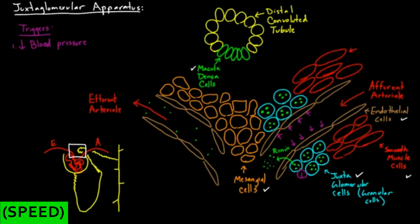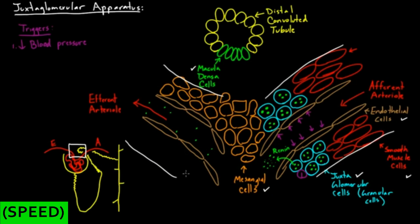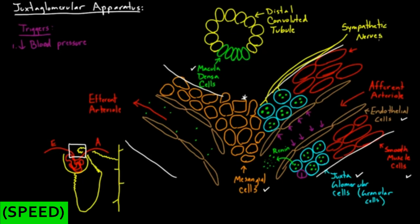The second trigger is a nerve cell trigger. Remember that this is a blood vessel with our two layers: our endothelial layer and our tunica media layer. There's also an external layer. In this external layer, you actually have little nerve endings — sympathetic nerve endings. And these sympathetic nerves come and sit with their little endings right on the juxtaglomerular cells. When they fire, that's going to make the juxtaglomerular cells want to dump out their renin. So the second trigger is sympathetic nerves.